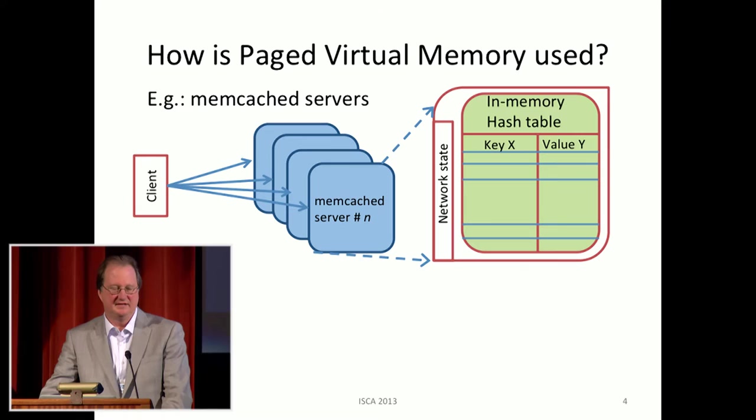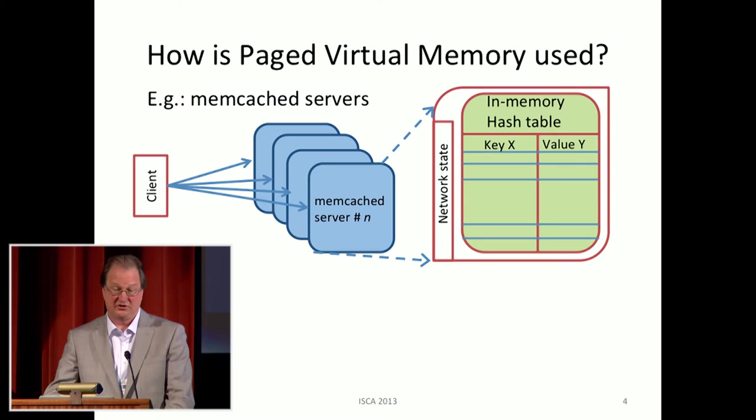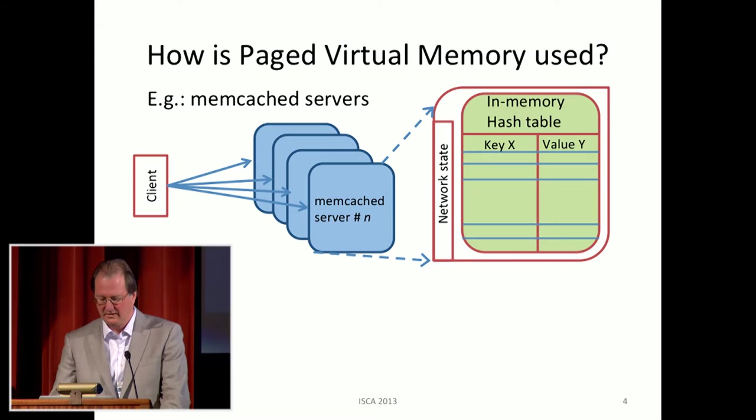An example of that is a memcached situation where you have a front end which distributes requests to a whole bunch of servers shown with those blue rectangles. Each server has a large memory, and most of that memory holds an in-memory hash table with keys and values. So you have terabytes of memory holding this table, which you certainly don't want to swap. And in the round-off error, there's a few gigabytes that hold operating system and network state.